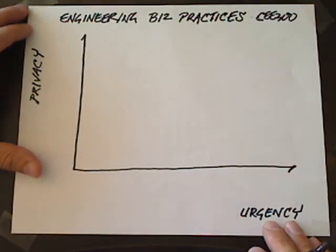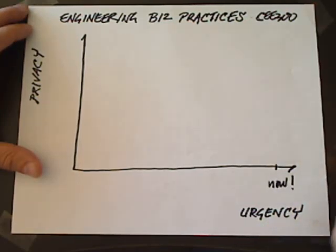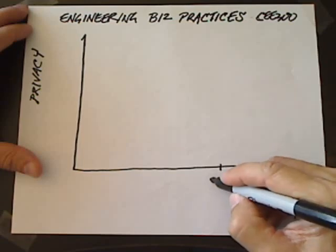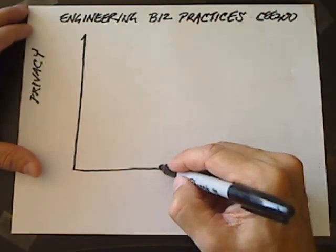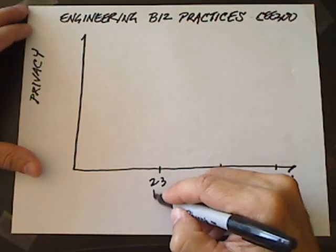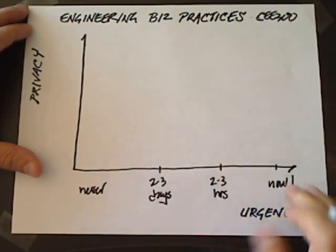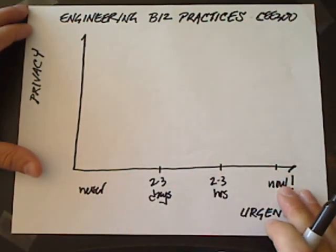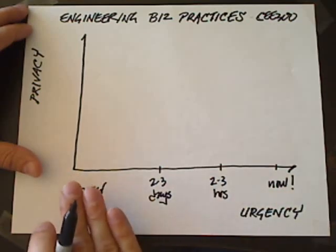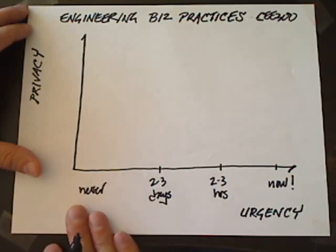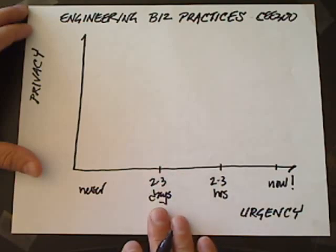The first criterion is urgency, and urgency is measured in units of time. How much time does the sender of the communication expect before the recipient will respond or react? The most urgent communications are those where the sender is expecting an immediate response, and less urgent might be never — never respond, never act — with two to three hours or two to three days somewhere in between.